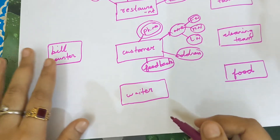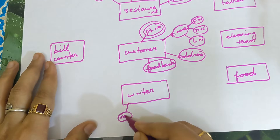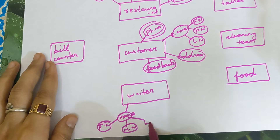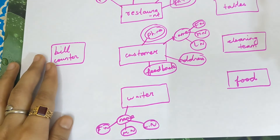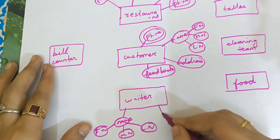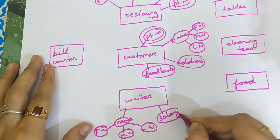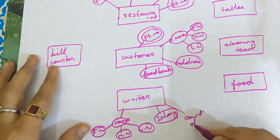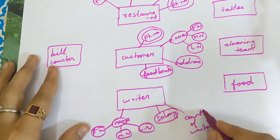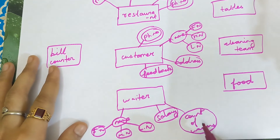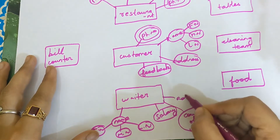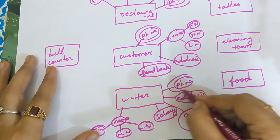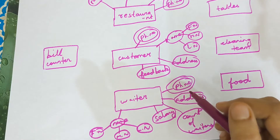Next, the attributes of the entity waiter. Waiter will have a name which is further divided as first name, middle name, and last name — therefore this name attribute is known as a composite attribute because you are able to divide it further. Next is salary of the waiter. Next is count of waiters — how many waiters are appointed in a restaurant. Next is address of the waiter. Next is phone number of the waiter, in double ovals because it is a multi-value attribute — a waiter can also have more than one phone number.